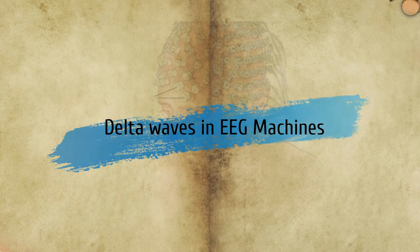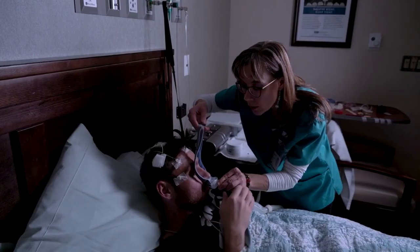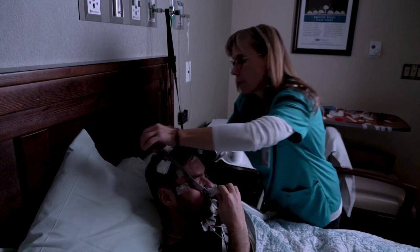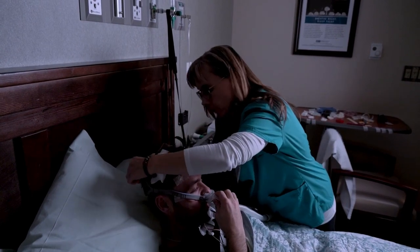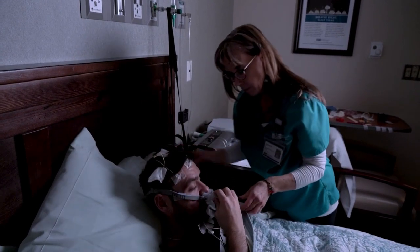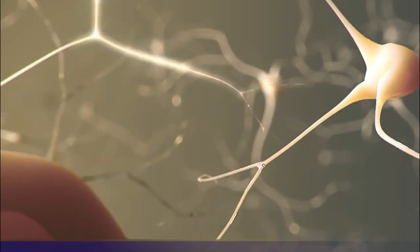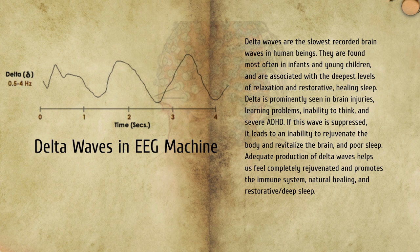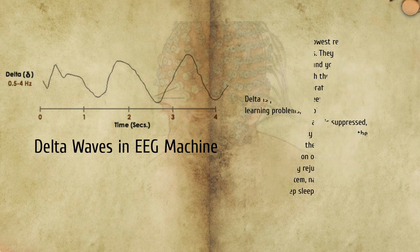First is delta waves. They have a frequency of 3 Hz or below. They tend to be the highest in amplitude and the slowest waves. Delta is normal as the dominant rhythm in infants up to one year and in stages 3 and 4 of sleep. It may occur focally with subcortical lesions and in general distribution with diffuse lesions, metabolic encephalopathy, hydrocephalus, or deep midline lesions.